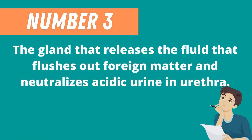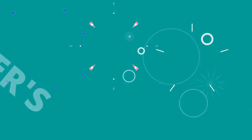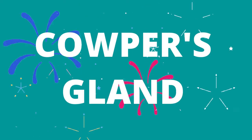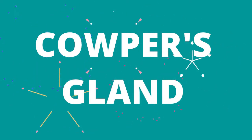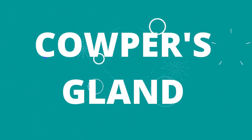Question 3: The gland that releases the fluid that flushes out foreign matter and neutralizes acidic urine in the urethra. If your answer is Cowper's gland or bulbourethral gland, you are correct.